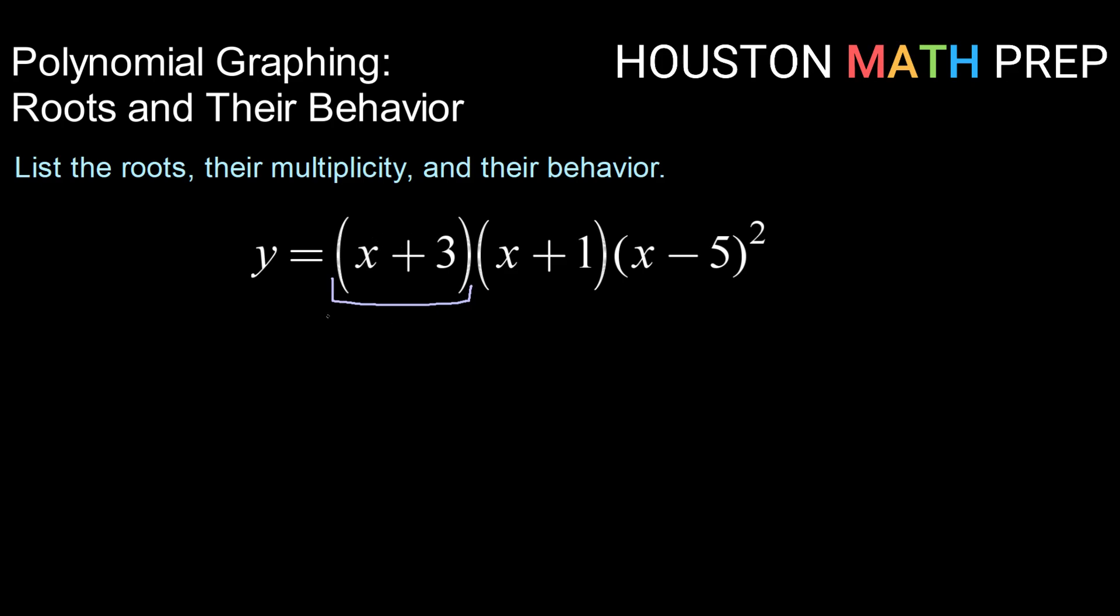Here for the factor of x plus 3, if we were to take that factor and set it equal to 0, then the x value that that would give, in this case negative 3, would tell us the x coordinate of our root. So our first root would be (-3, 0).